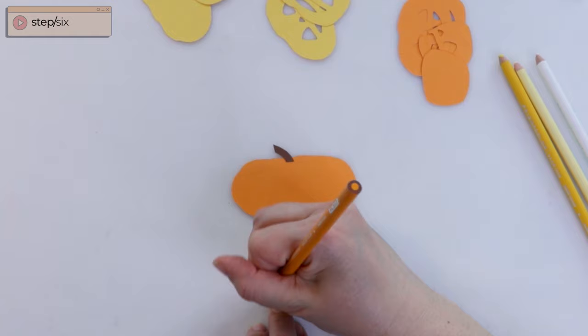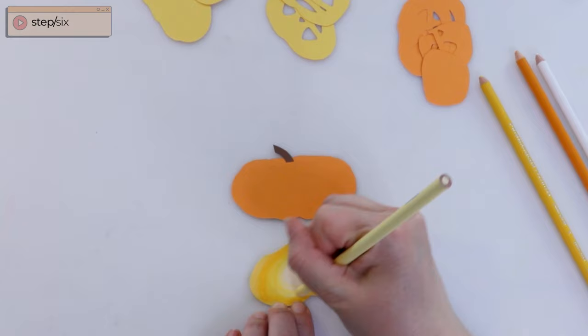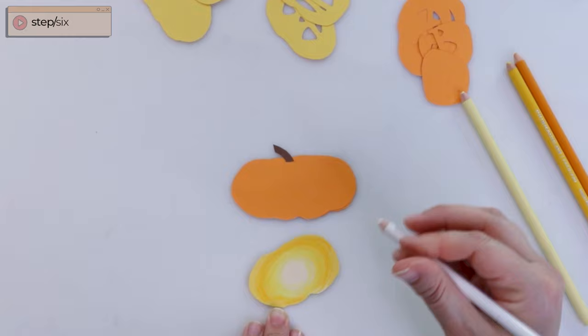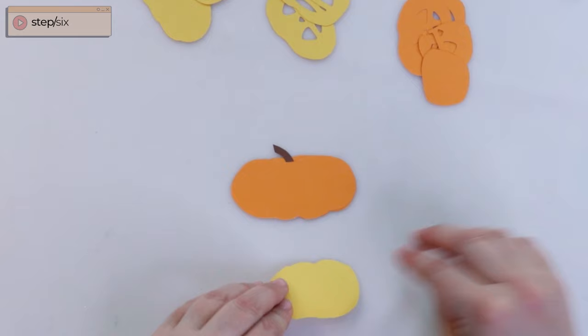Once you have all of those colors down, go ahead and make sure to blend over them and kind of smooth out and merge these colors together so that there is a smooth transition between all of them. This is what's going to create that soft glow effect inside of our jack-o'-lantern. And you probably know the drill now. Go ahead and take your tape runner and attach this shape to the center of your pumpkin just as you see me doing here.